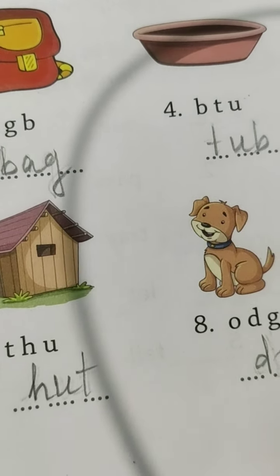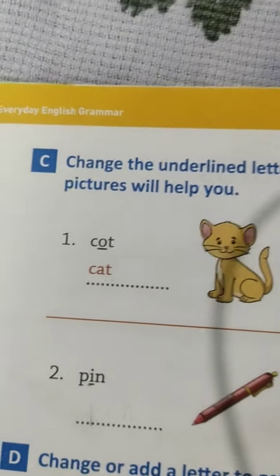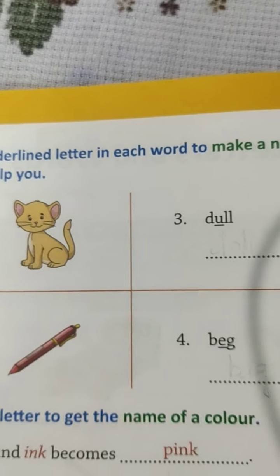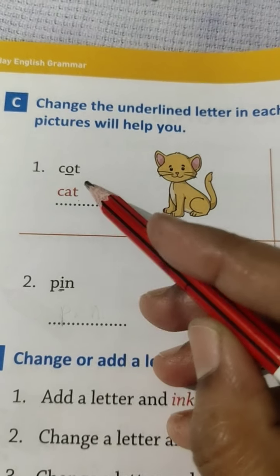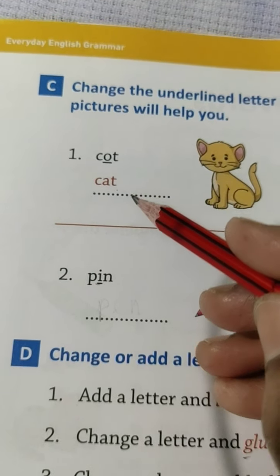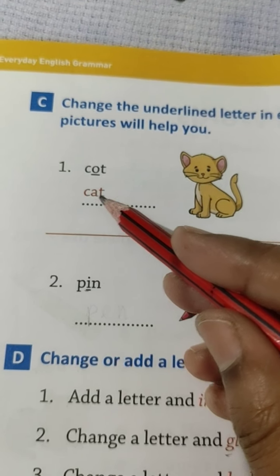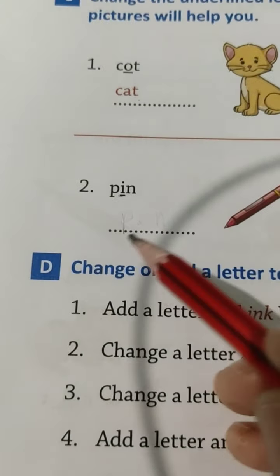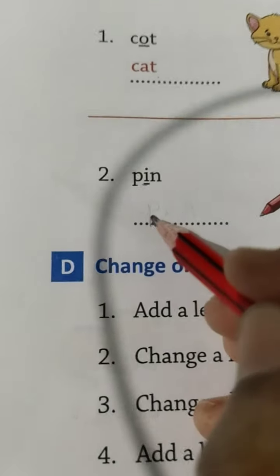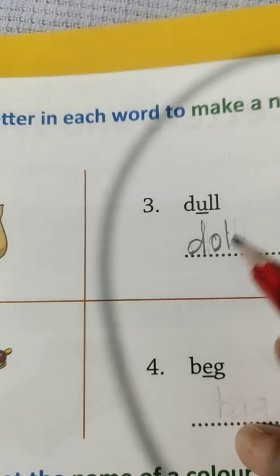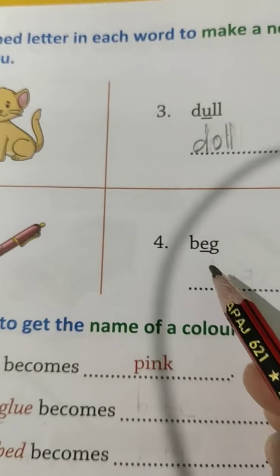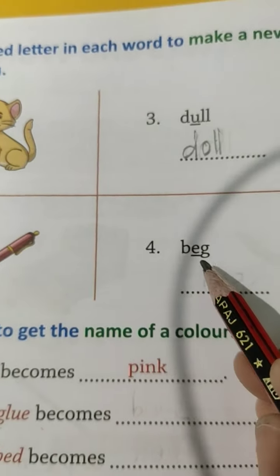Okay children, turn the page. Change the underlined letter in each word to make a new word. The pictures will help you. The first one is done for you — the underlined letter changes and it becomes C-A-T. Cat. Second one: P-I-N — the underlined letter is I — we change that to get P-E-N. Pen. Number 3: D-U-L-L — the underlined letter is U — we change U to O: D-O-L-L. Doll. Number 4: B-E-G — we change it to B-A-G. Bag.